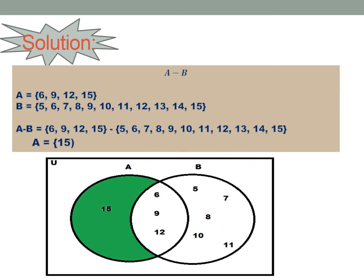So we have here a Venn diagram. The shaded part is the set of A, which is 15. So A minus B is shaded.